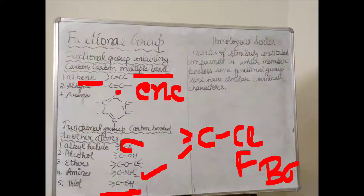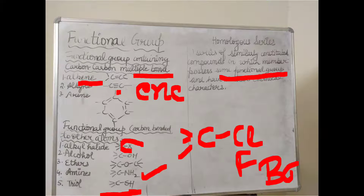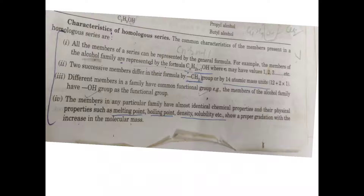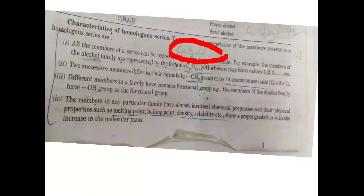So this is regarding the functional group. After that, there is the homologous series. What is a homologous series? A series of similarly constituted compounds in which each member possesses the same functional group and similar chemical properties is termed as a homologous series. All members of the series can be represented by the general formula C_nH_(2n+1)OH.